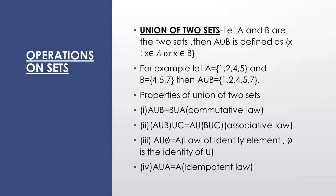The first operation is union of two sets. Union of two sets: let A and B be two sets, then A union B is defined as the set of all x such that x belongs to A or x belongs to B.